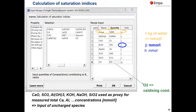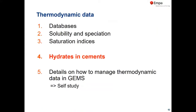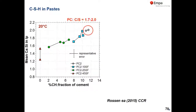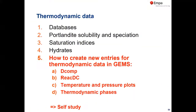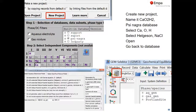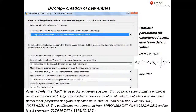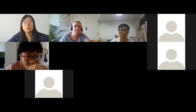There's also a summary of different hydrates in cement — we can look at that tomorrow if needed. There are details on how to manage thermodynamic data in GEMS, including step-by-step instructions for creating new entries in ICOMP, DCOMP, etc. If you ever need to do that (some exercises require it), you can look it up there. It's preferable to read it yourself and come back if there are any problems.